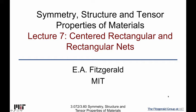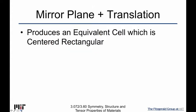Let's combine the mirror plane with translation to see if we get any new nets. The first way to do this is the generic way, which produces something called the centered rectangular.